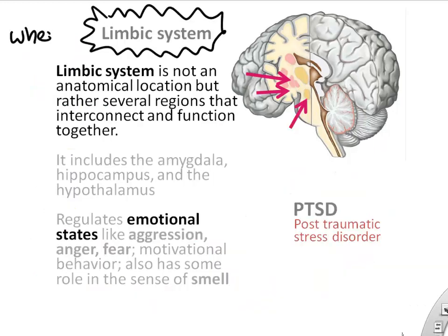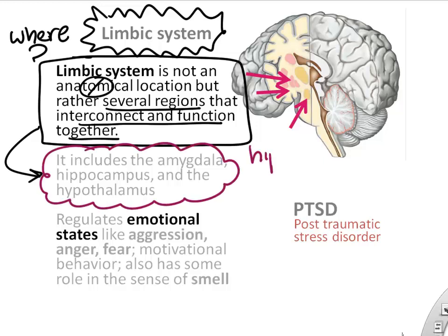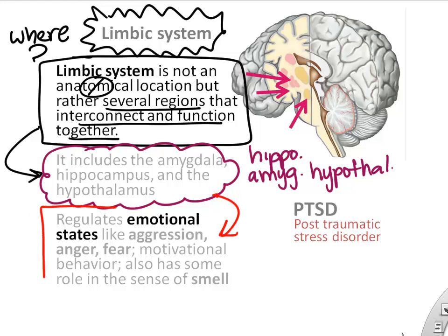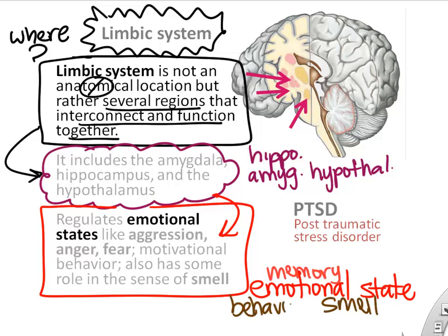The limbic system is not a single anatomical spot but rather several brain regions — including the amygdala, hippocampus, hypothalamus, and parts of the cerebrum — that are involved in emotional states such as aggression, anger, fear, and emotional memory. Even smell is tied into the limbic system. Researchers are studying the limbic system more and more in relation to PTSD.